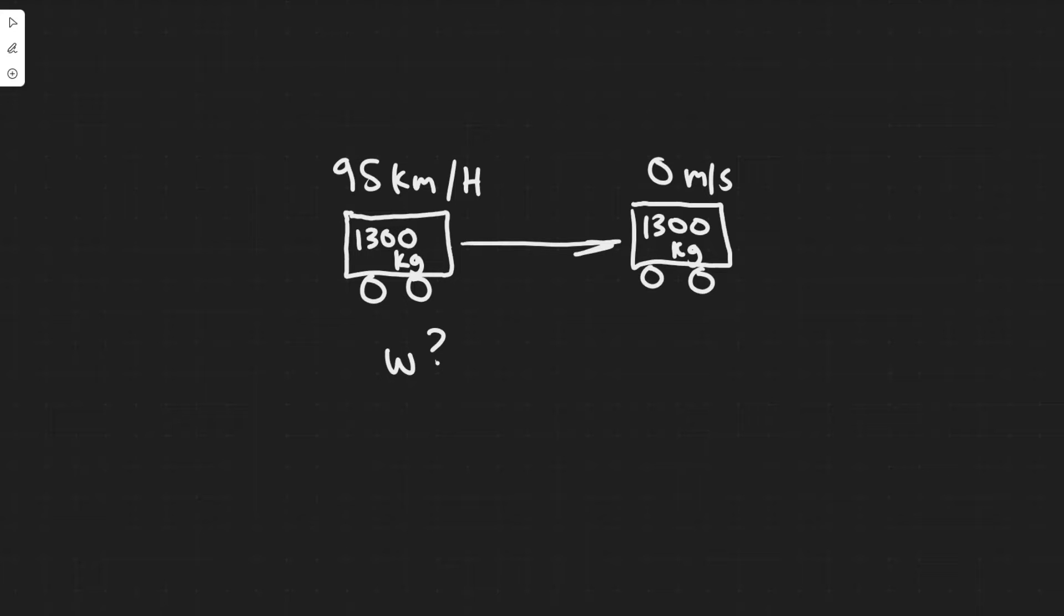The way we're going to do this is by using the work energy theorem, which tells us that the work is equal to the change in the kinetic energy. So if we can find the change in the kinetic energy from the beginning to the end, that's going to give us how much work it takes in order to stop it.